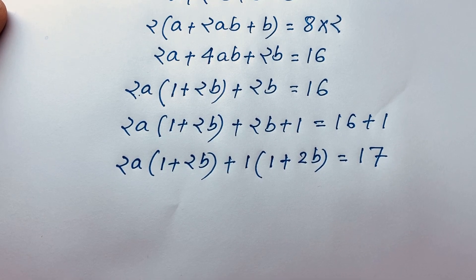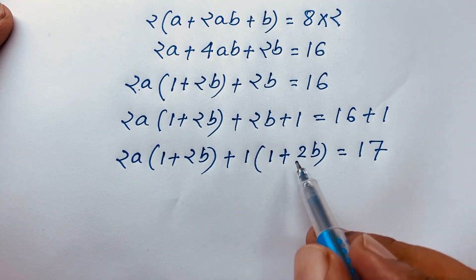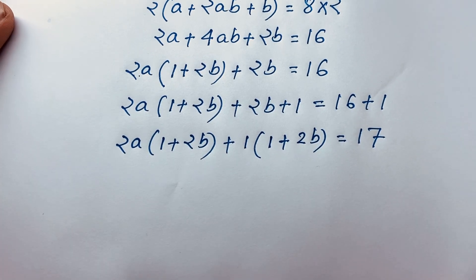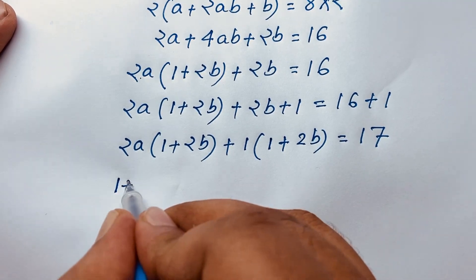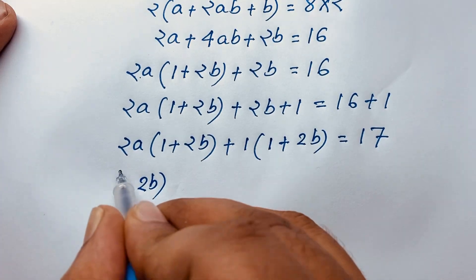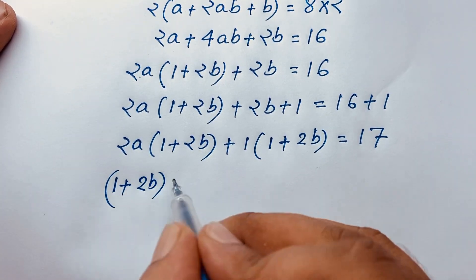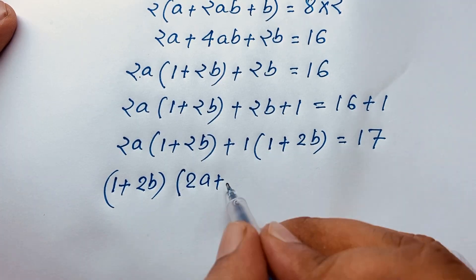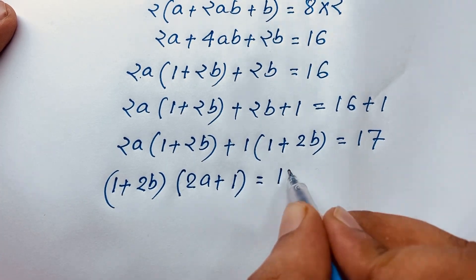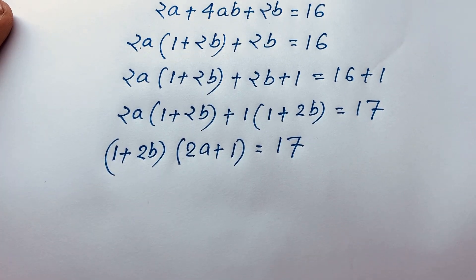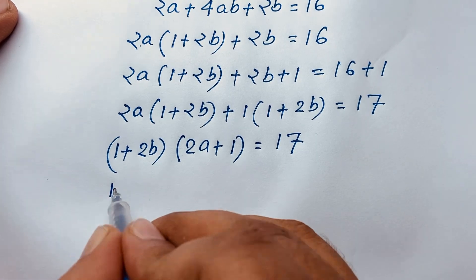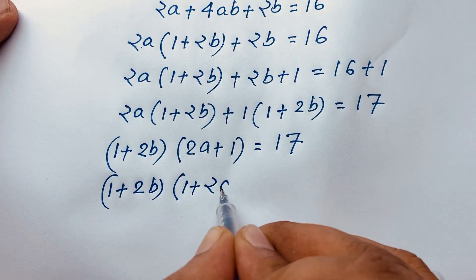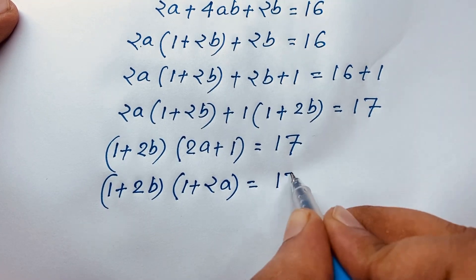Now you can see here (1 plus 2B) is common, so I take (1 plus 2B) as common. So it will be (1 plus 2B) times (2A plus 1) is equal to 17.